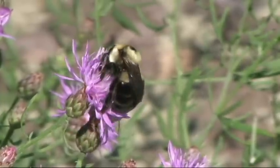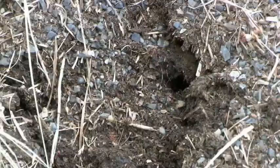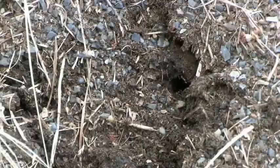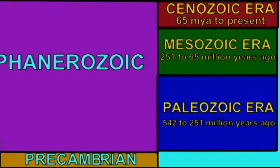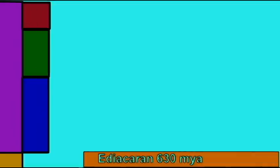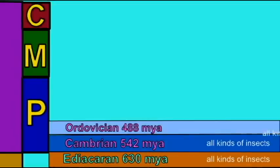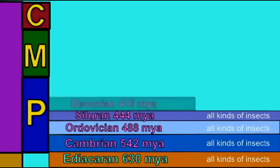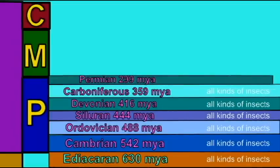This is an easy hypothesis to test. When one finds fossils in Devonian rocks, or Silurian rocks, or Jurassic rocks, etc., then one could find representatives of every modern kind of insect.